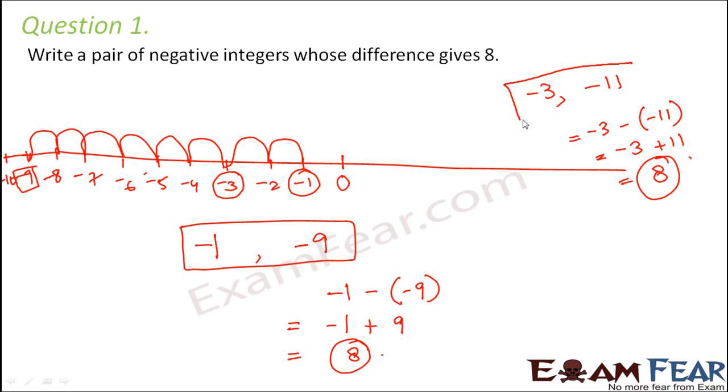So minus 3 and minus 11 could be another pair of negative integers whose difference is 8. So you can have infinite number of pairs of negative integers whose difference would be 8.